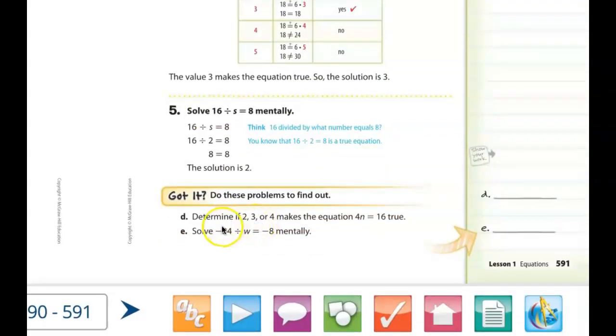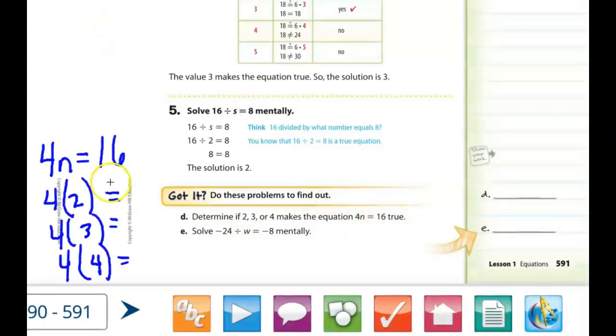So we're going to go ahead and try 2 together. Determine if 2, 3, or 4 makes the equation 4 times n equals 16 true. So I've written out each possible equation. 4 times n equals 16. 4 times 2. 4 times 3. 4 times 4. So I want you to tell me which one would actually be correct. 2, 3, or 4 as the correct factor to put in place of the n. Go ahead and share that with me now. Of course the answer is 4 because 4 times 4 does equal 16. So that would make that true.